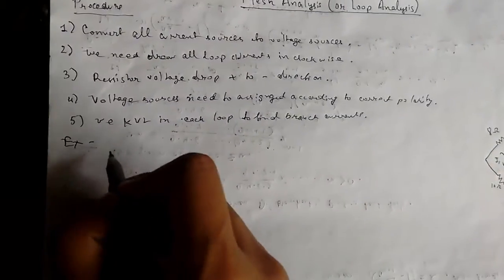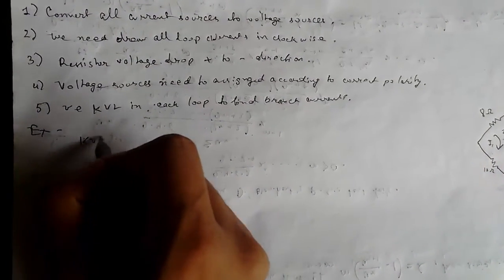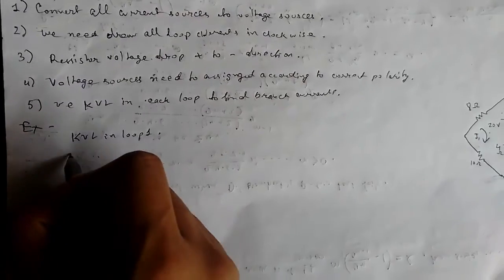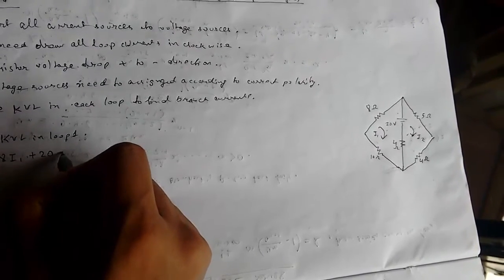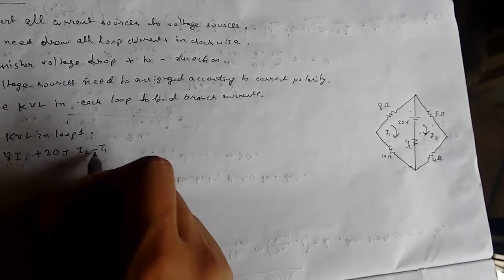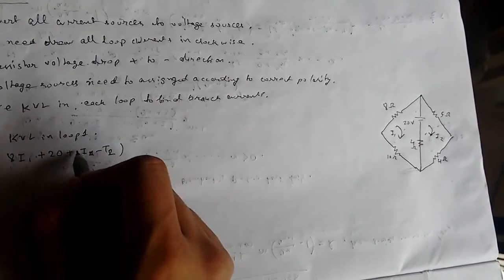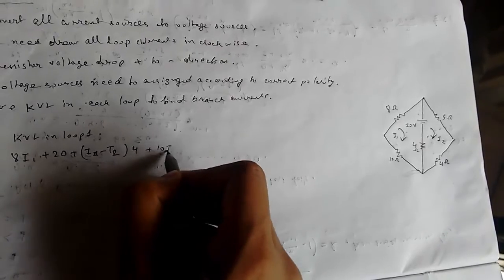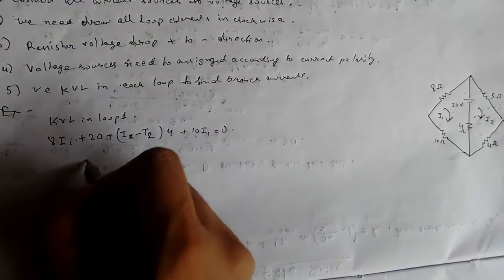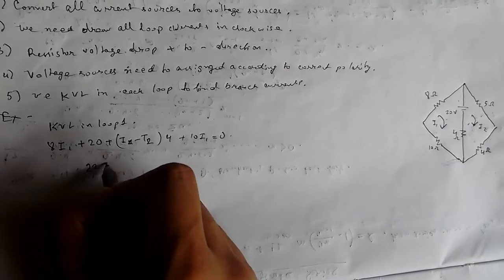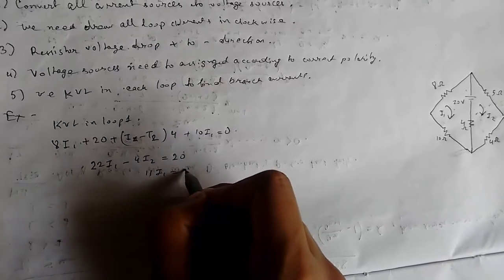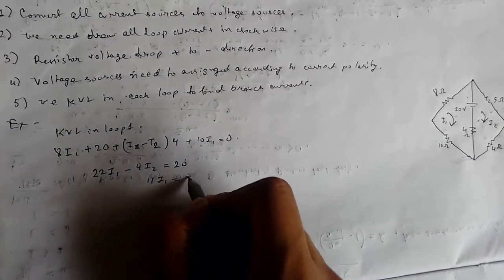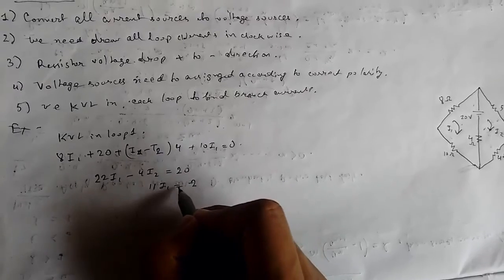Now we need to apply KVL in loop 1. Using KVL in loop 1, we get 8I1 + 20 + (I1 - I2) times 4 + 10I1 equals 0. This will be 22I1 - 4I2 equals 20.